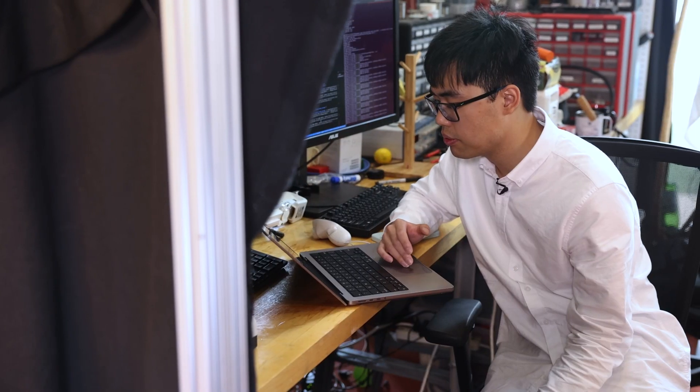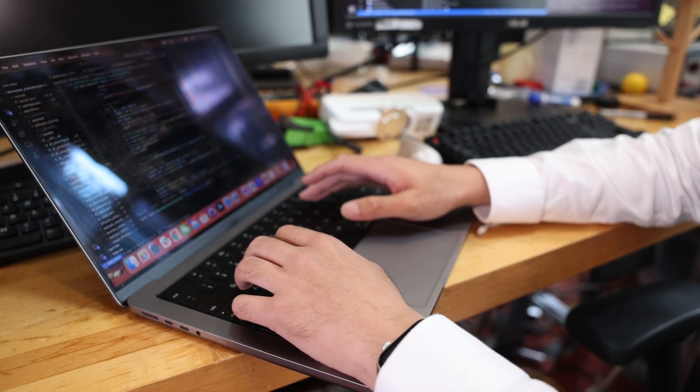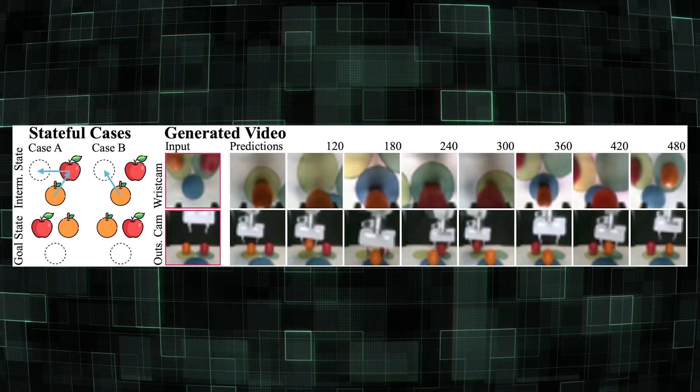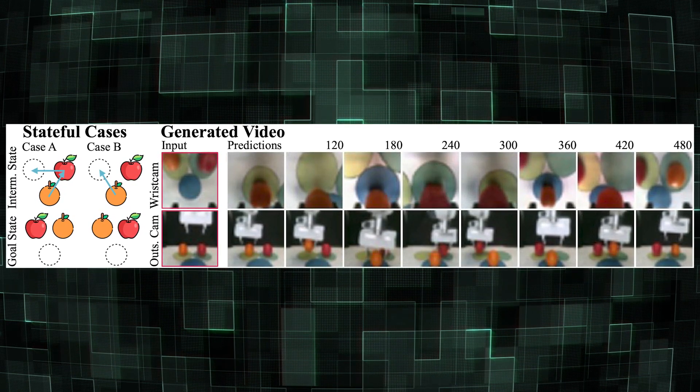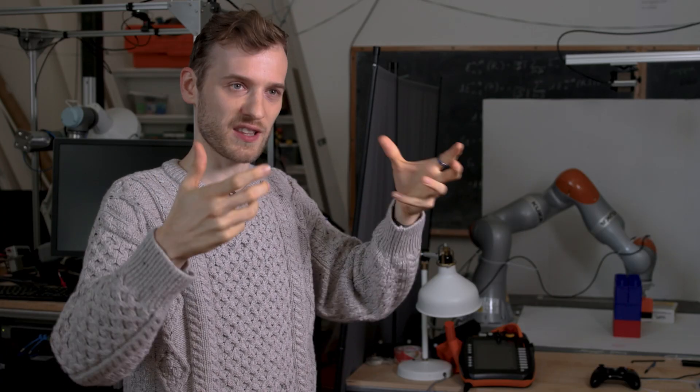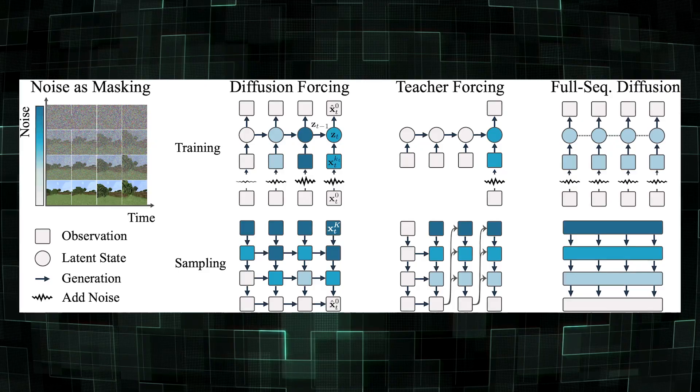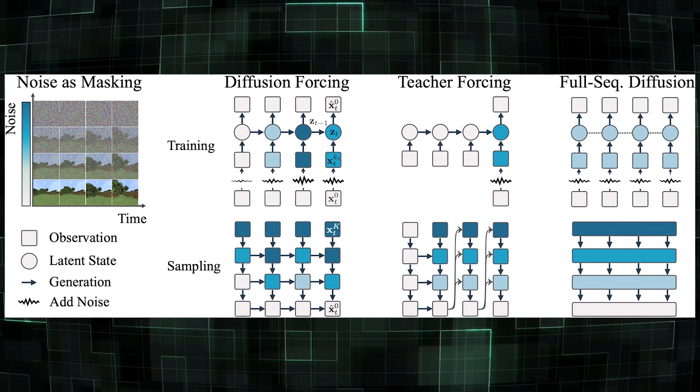The way we tackle this in diffusion forcing is by training a model where we give it a video sequence and then destroy some of the frames in that video sequence to varying degrees. So imagine some of the frames get really noisy, and some of them remain clean. Essentially what we're doing is forcing the model to fill in any gap of any video. You could give it the first frame and the last frame, and those are very clean, and then all of the ones in between are really noisy, and the model is forced to fill in the whole gap.